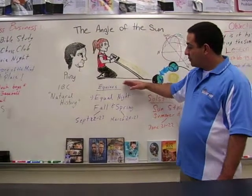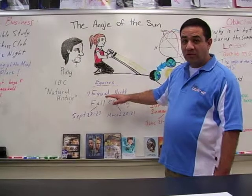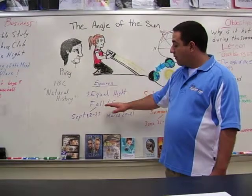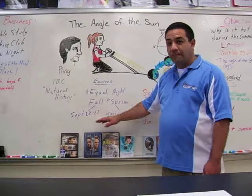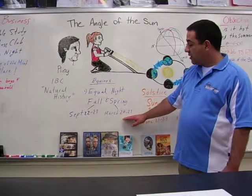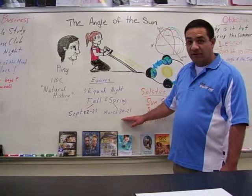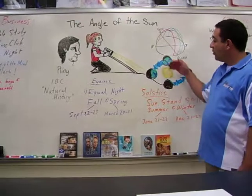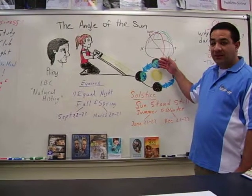The equinox is also a Latin word, meaning 'equal night.' The fall equinox occurs on September 22nd or 23rd, while the spring equinox occurs on March 20th or 21st. The equinox is when both the Northern and Southern Hemisphere have equal amounts of light.